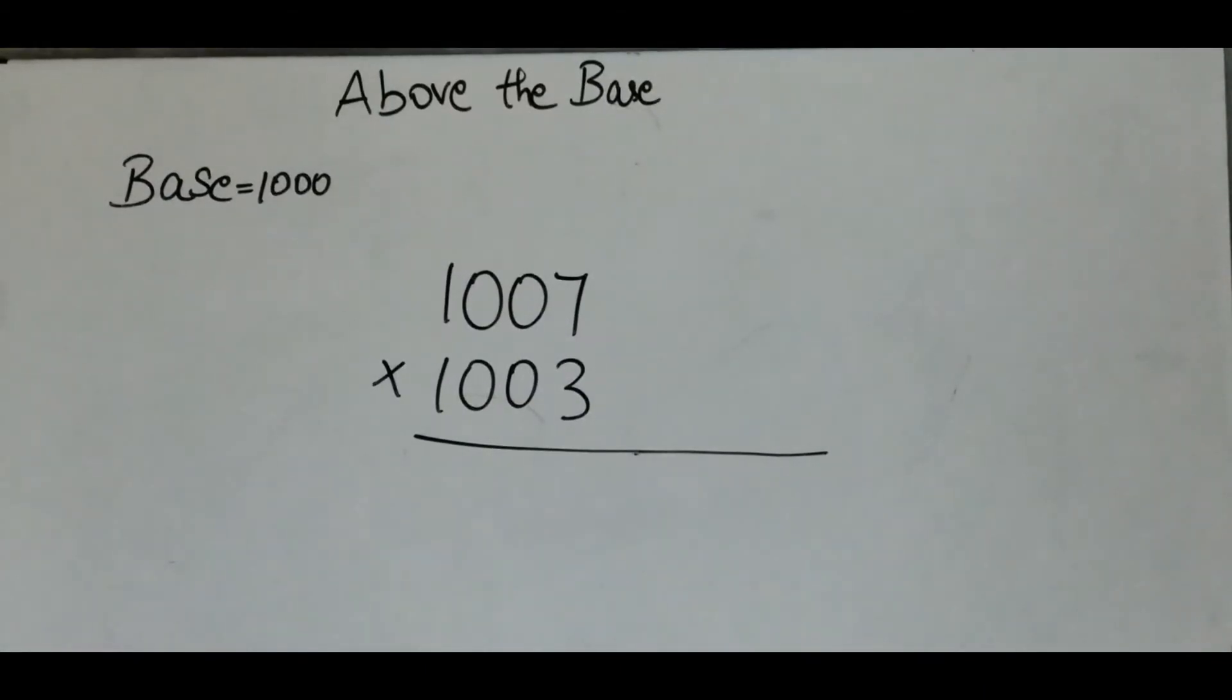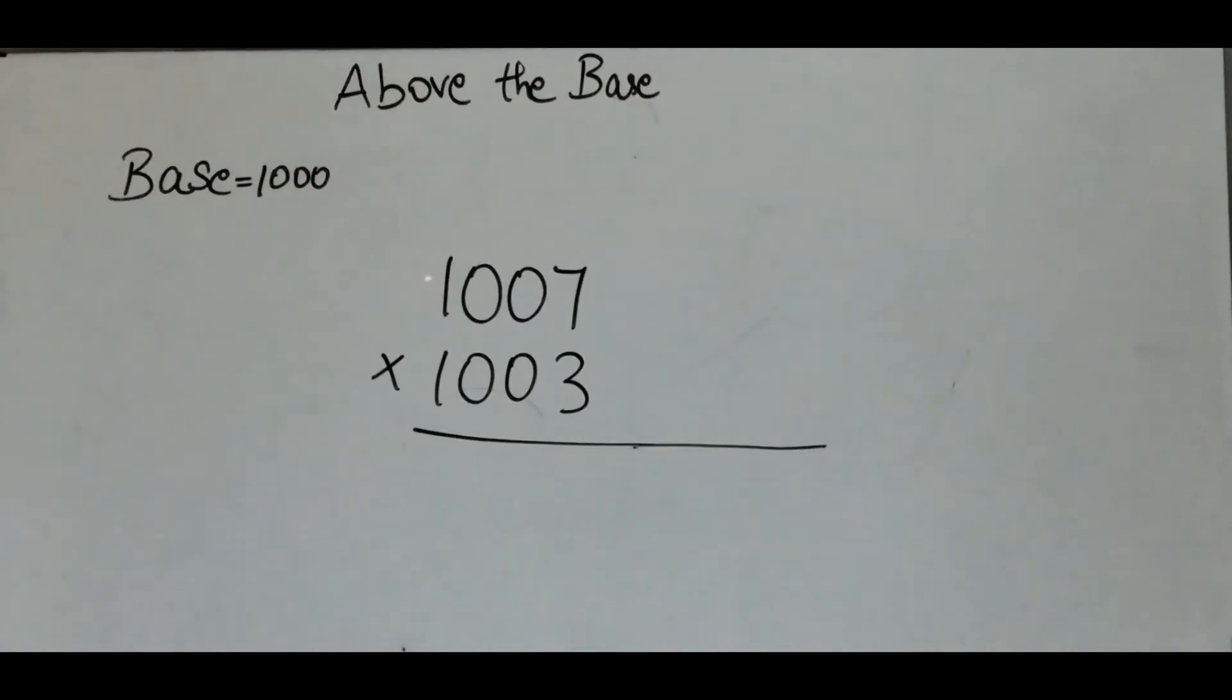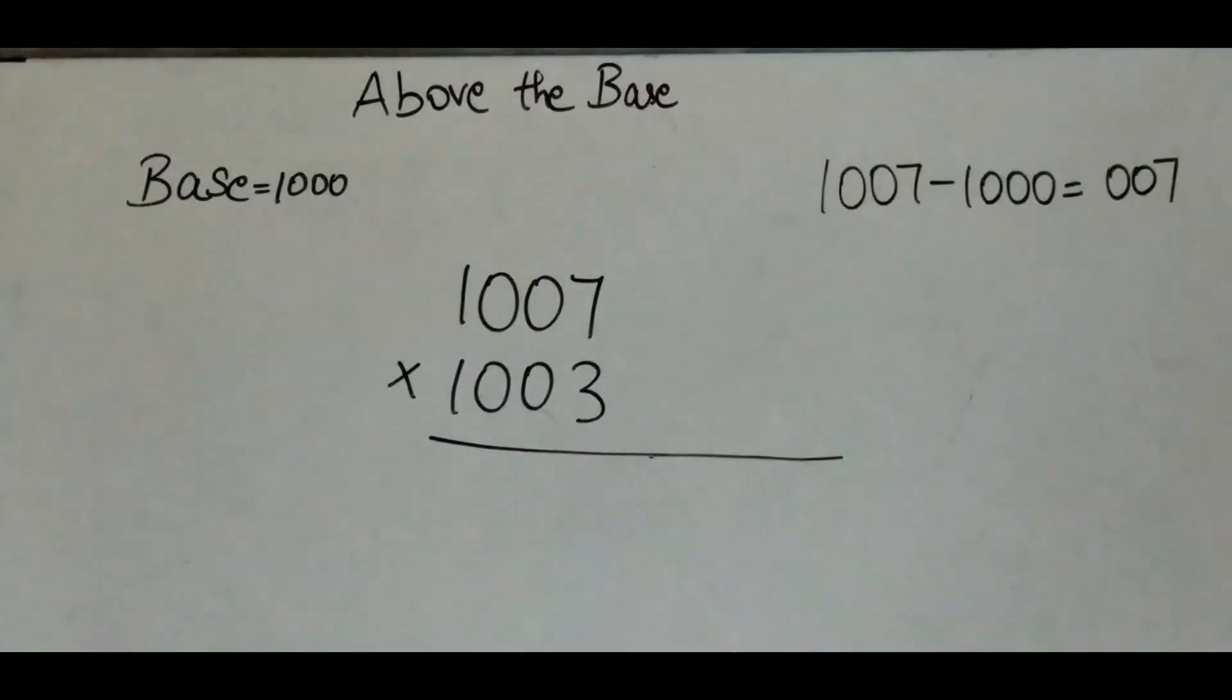Now let's try another example which is above the base. Let's try 1007 times 1003 which is above the base.